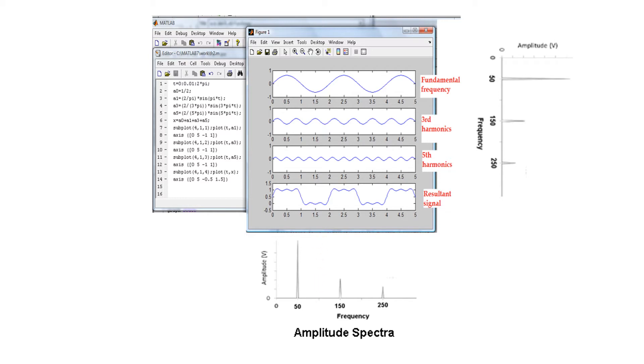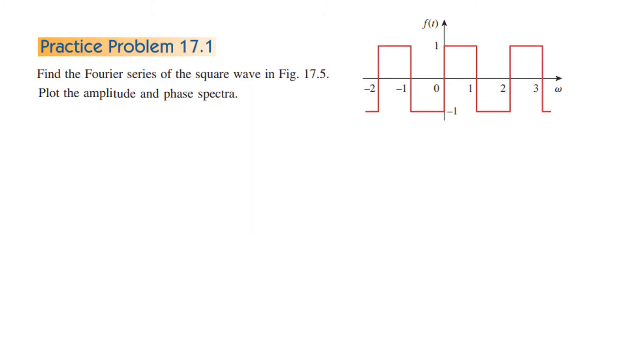Okay, with this background, now we will solve the problem. Find the Fourier series of the square wave. So this is the square wave.